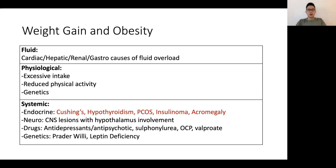Then we start looking at the medical causes. The endocrinopathies would be important, such as Cushing's, hypothyroidism, acromegaly, PCOS, and insulinoma for completeness. Also, when the hypothalamus is involved, that may affect the hunger center, and hence central nervous system lesions affecting that area can also sometimes cause weight gain mediated through an increase in appetite.